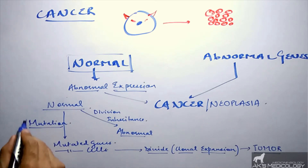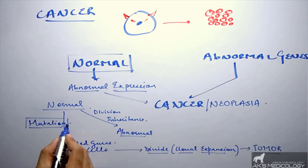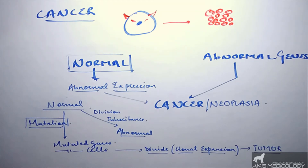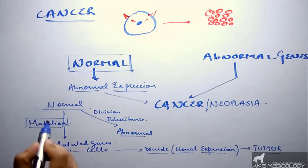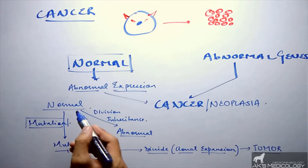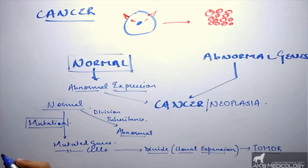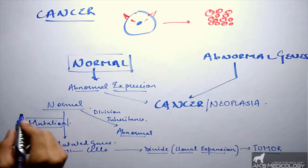The factors which lead to mutation of normal genes or cells are collectively known as carcinogens, because they cause mutation and lead to the conversion of normal genes into mutated genes or cancer genes. These are broadly divided into three types.